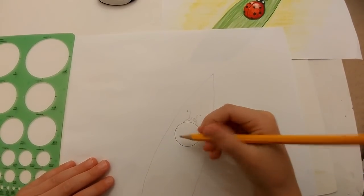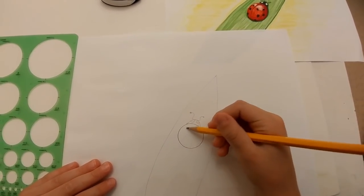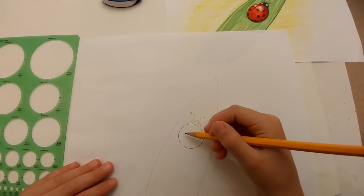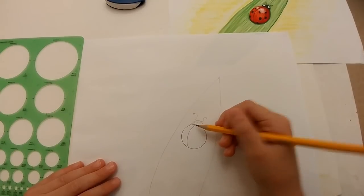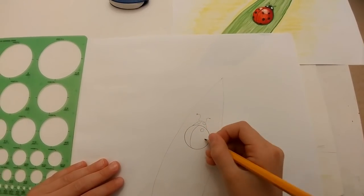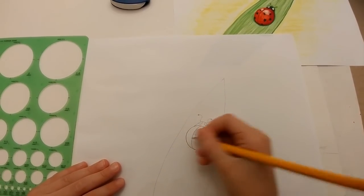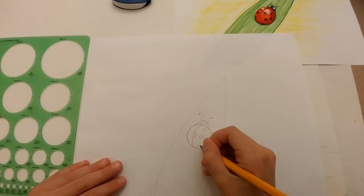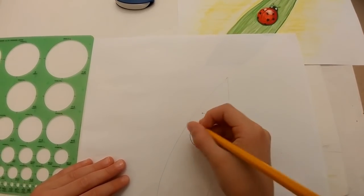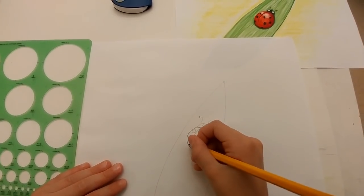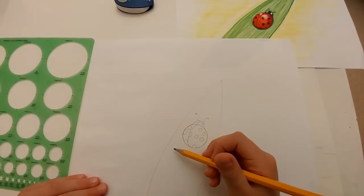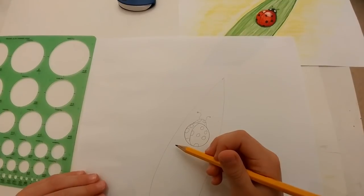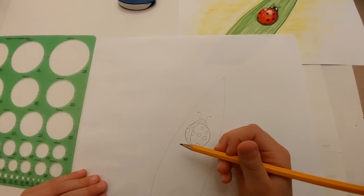Now I'm going to draw a line, an arching line, closest to the left side of the ladybug and add some spots. We're almost done with the ladybug. Let's color it!